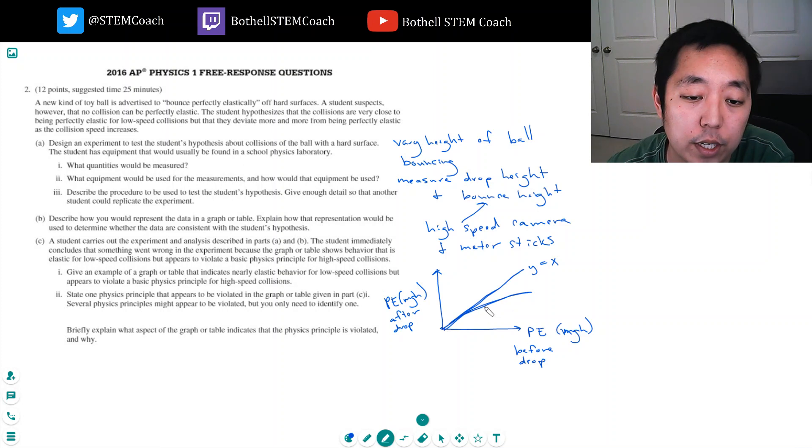But if it deviates then you would see it kind of go like this, it would deviate from a straight line. Okay, a student carries out the experiment and analyzes as described in part A and B. The student immediately concludes that something went wrong with the experiment because the graph or table shows behavior that is elastic for low speed collisions but appears to violate a basic physics principle for high speed collisions.